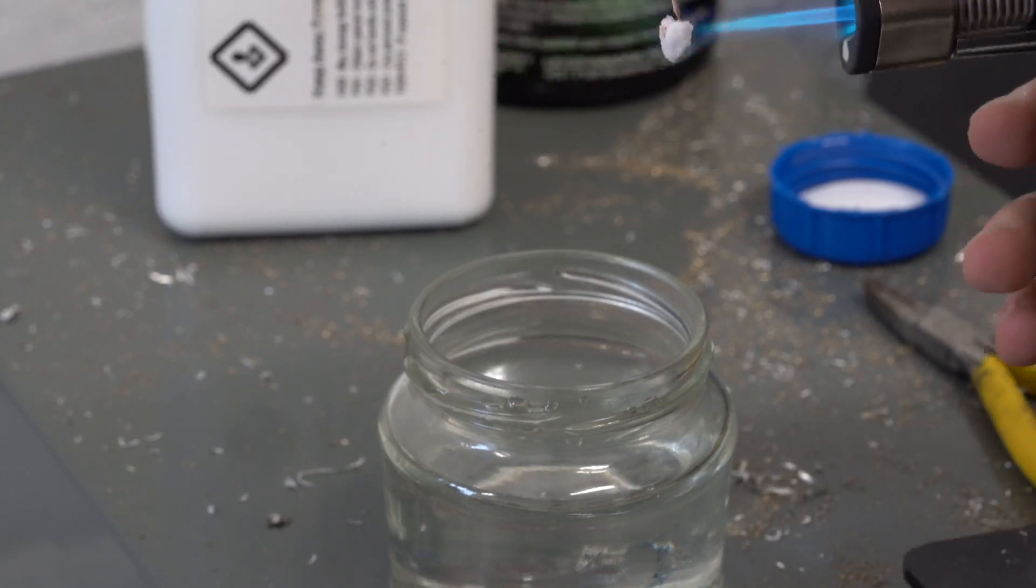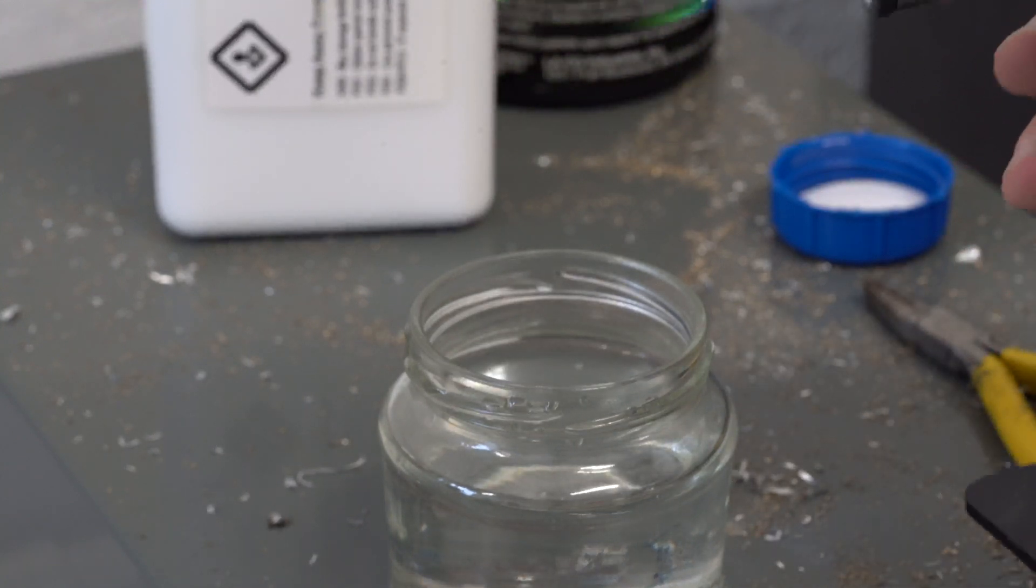My filming is dreadful here, but I'm bringing this screw up to a nice cherry red and I'm holding it there for a few seconds. That allows the heat to penetrate deeper into the screw ready for quenching.